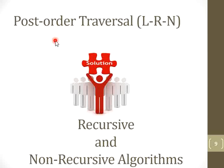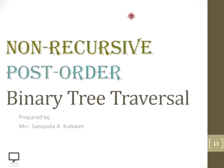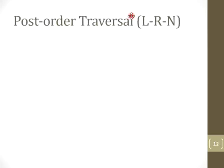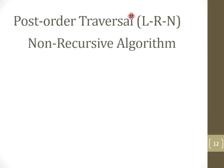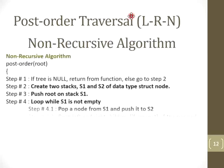I have already explained the recursive algorithm for post-order traversal with dry running using an example. You can go through my previous video — I am providing a shortcut link for that. Now we are focusing on the non-recursive algorithm, and the heart of this video session is dry running the non-recursive post-order algorithm for binary tree traversal. So first of all, let's focus on the non-recursive algorithm.